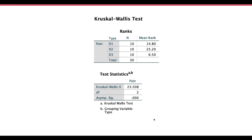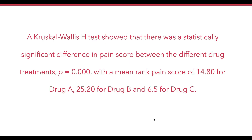We would report: a Kruskal-Wallis H test showed a statistically significant difference in pain score between different drug treatments with p-value equal to 0.000. The mean rank of pain score was 14.8 for drug A, 25.2 for drug B, and 6.5 for drug C. Drug C was most effective because the lower the number, the lower the pain. I hope you are able to understand this demonstration. Thank you so much.